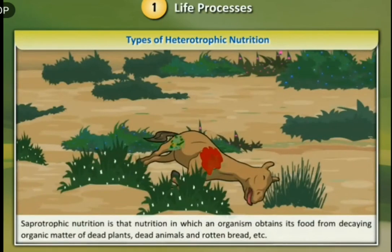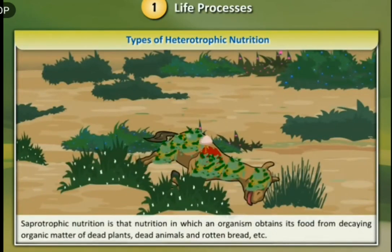Saprotrophic nutrition is that nutrition in which an organism obtains its food from decaying organic matter of dead plants, dead animals, and rotten bread, etc.